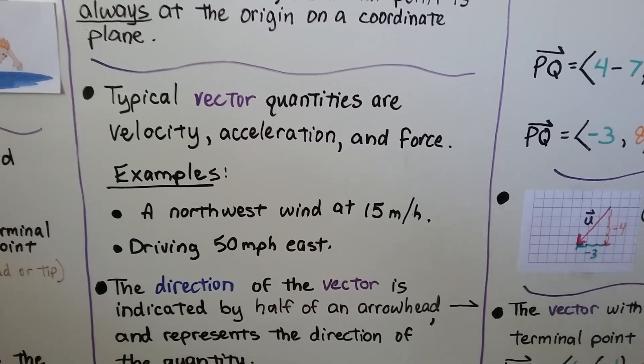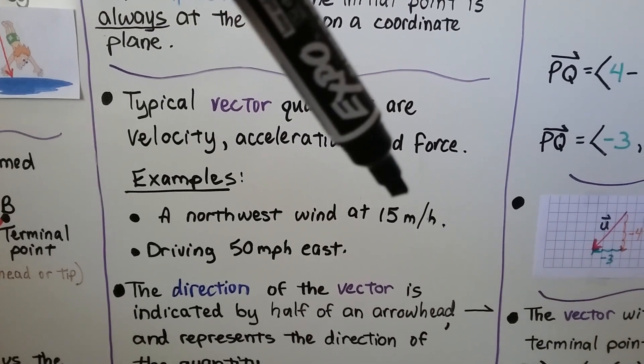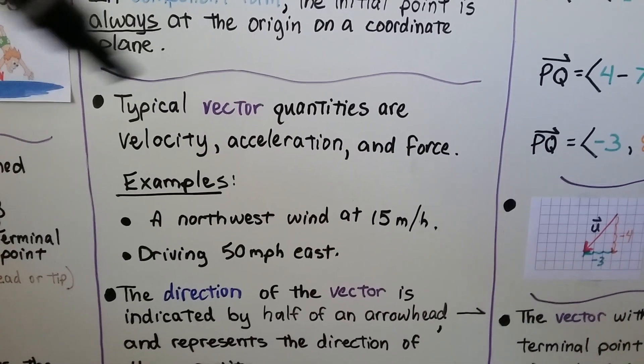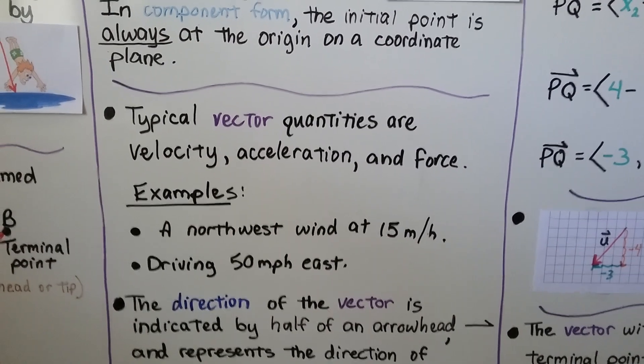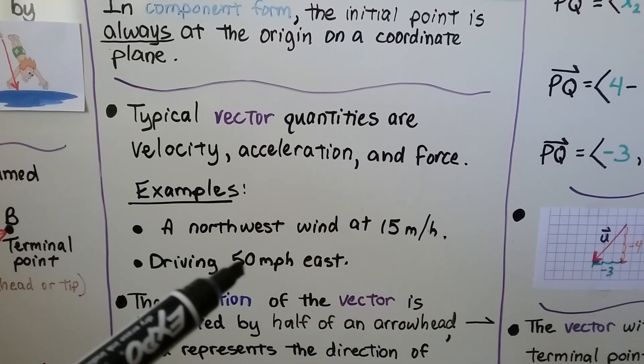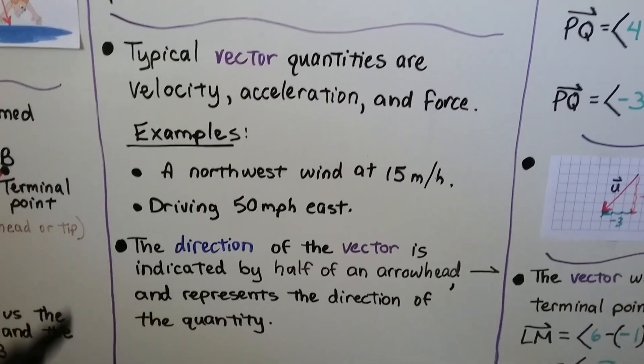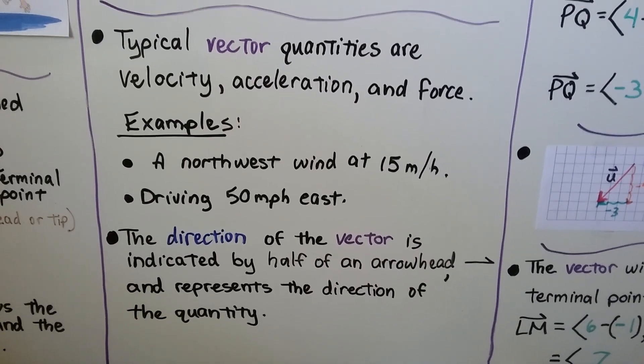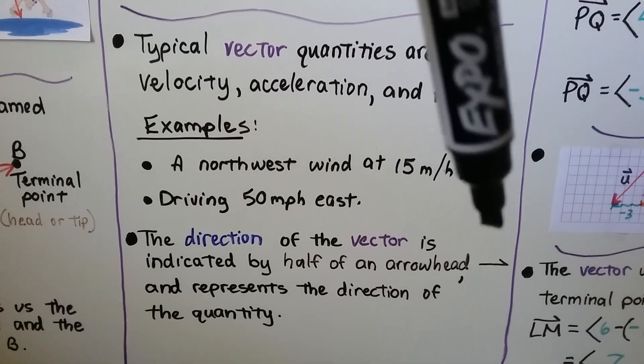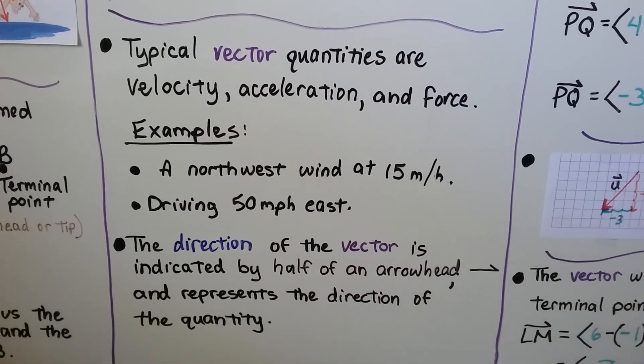A northwest wind at 15 miles per hour, so we've got a speed and a direction. Or driving 50 miles per hour east, we have a speed and a direction. And the direction of the vector is indicated by half of an arrowhead and represents the direction of the quantity.